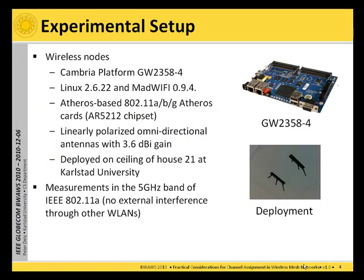To do so, we conducted a series of experiments using the following setup. We used the Cumbria platform, Gateworks 2358-4 — those are embedded network processors — as our basic platform and ran Linux 2.6.22 and MADWiFi 0.9.5.94 on the platform. Each of the nodes is equipped with several Atheros-based WLAN cards, which have omnidirectional antennas with 3.6 dBi gain. The whole system is deployed at the ceiling of House 21 at Karlstadt University. The measurements were conducted in the 5 GHz band of IEEE 802.11a. By that we avoid external interference from the campus wireless LAN, which runs on the 2.4 GHz band.